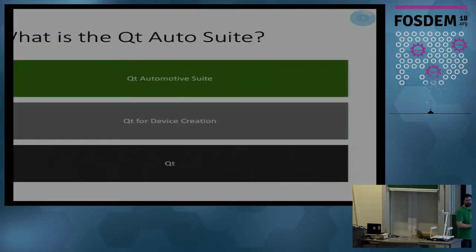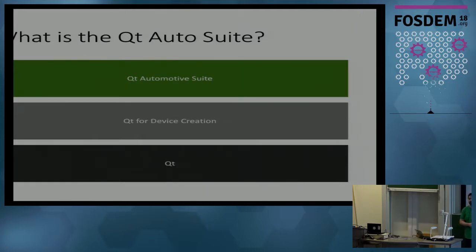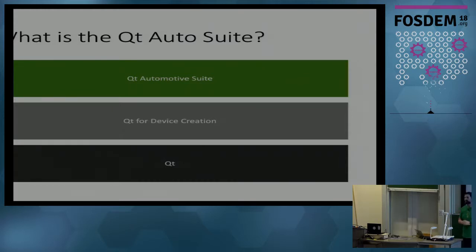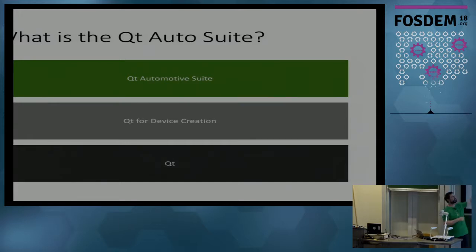I'm going to talk about the Qt Automotive Suite. Qt basically comes in different packagings. As a commercial paying customer, you either buy Qt, or Qt for Device Creation, which brings you slightly more. And then you can buy Qt for Automotive Suite, which brings you even more on top of Qt for Device Creation. What's important is to realize it's all of Qt, all of the embedded Linux stuff for Qt, and then some more.